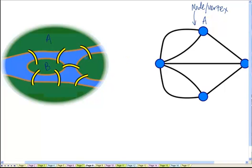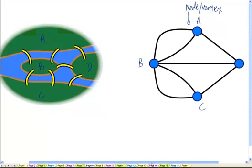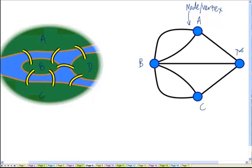This island in the middle B can be represented as another vertex. This region C over here can be represented as a third vertex. And finally, this fourth region is represented as a fourth vertex.